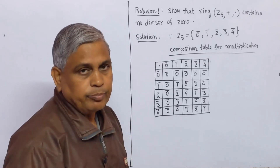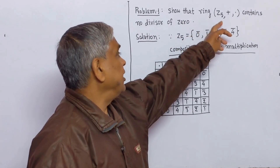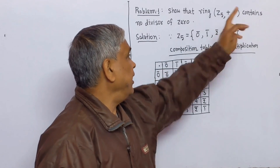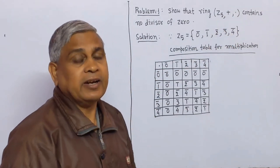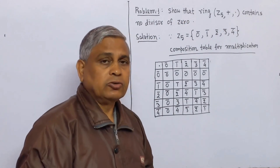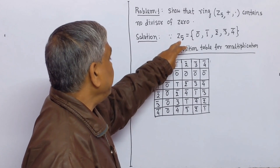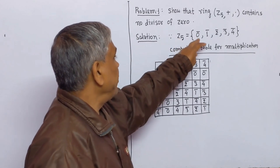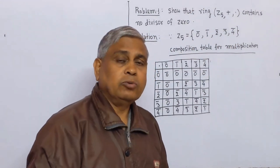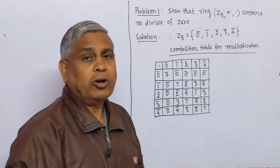We solve a problem. The problem is to show that ring Z5 with binary compositions addition and multiplication contains no divisor of zero. Since Z5 contains elements 0-bar, 1-bar, 2-bar, 3-bar, 4-bar, now we frame the composition table for multiplication.